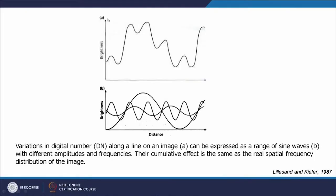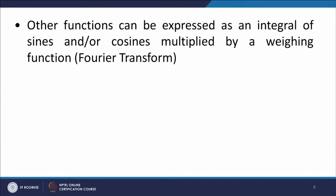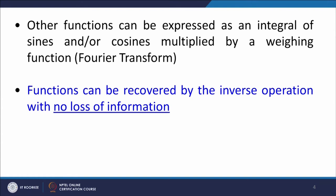The combined sum of all these wavelength waves is shown here. The variations in digital numbers along a line on image A can be expressed as a range of sine waves of different amplitude and frequencies, as shown in the lower figure. When you sum the different amplitudes and frequencies, the cumulative effect is the same as the real spatial frequency distribution of the image. Other functions can also be expressed as an integral of sines or cosines multiplied by a weighing function — that is the Fourier transform — and the function can be recovered by inverse operations with no loss of information.